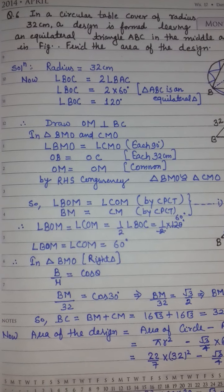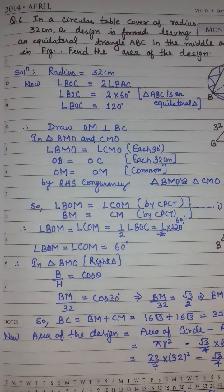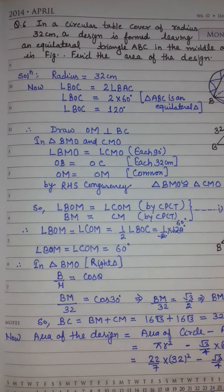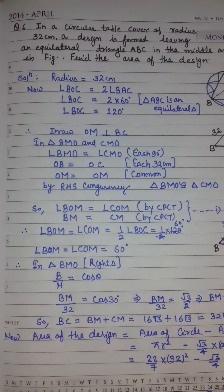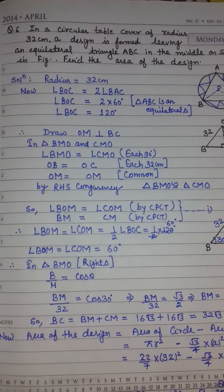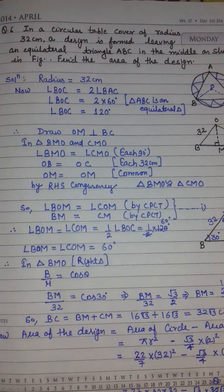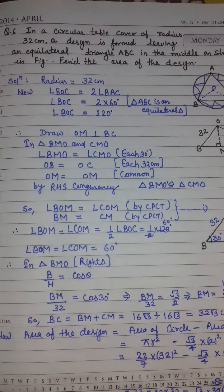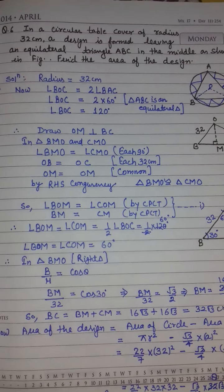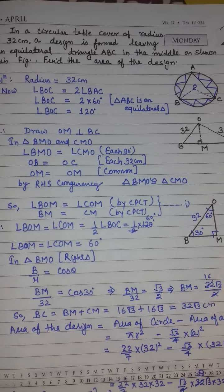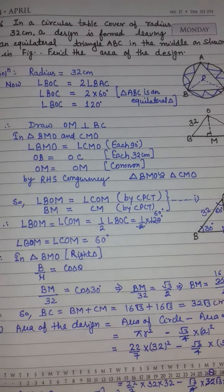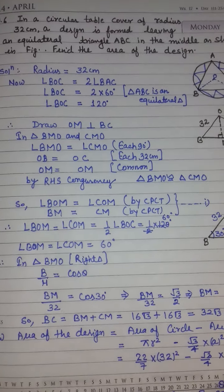Good afternoon. Welcome. Class 10, Chapter 12 — Area Related to Circle, Exercise 12.3, Question 6. In a circular table cover of radius 32 centimeters, a design is formed leaving an equilateral triangle ABC in the middle as shown in the figure. Find the area of the design.